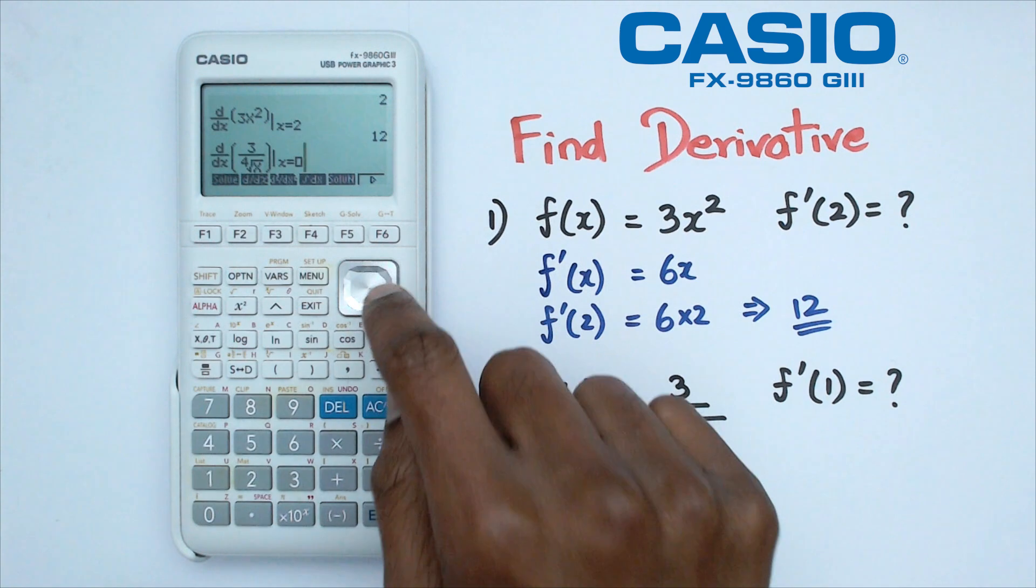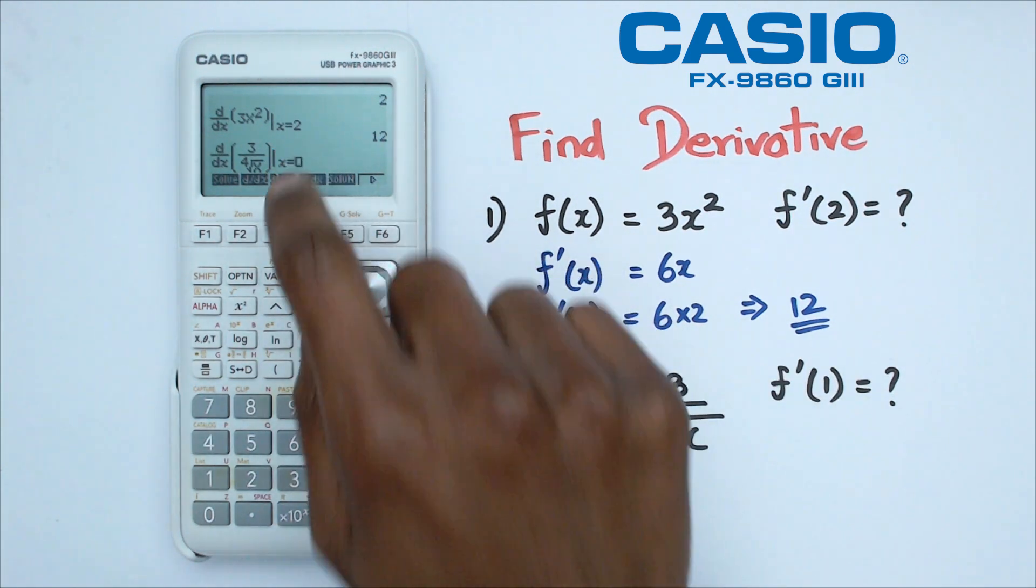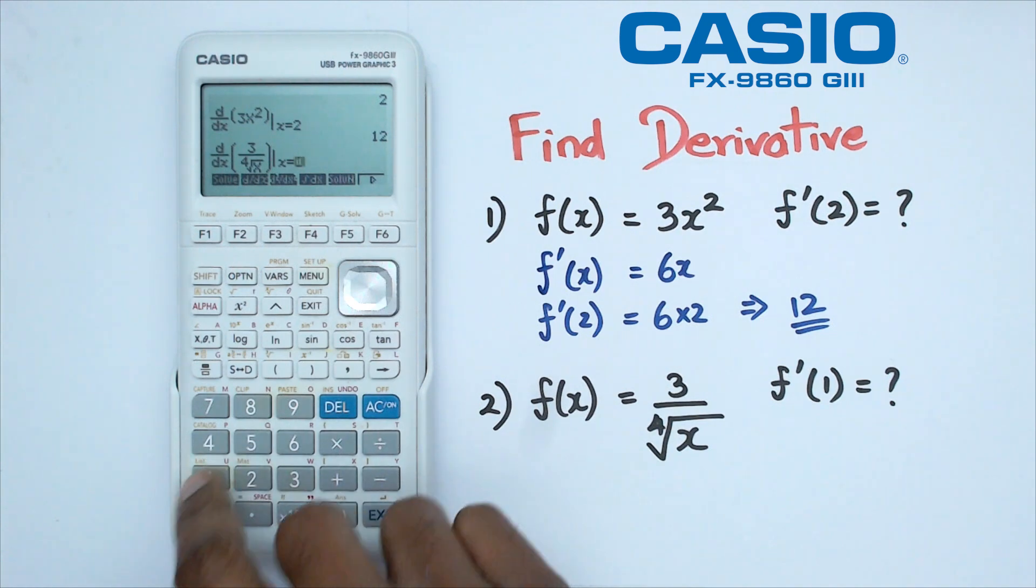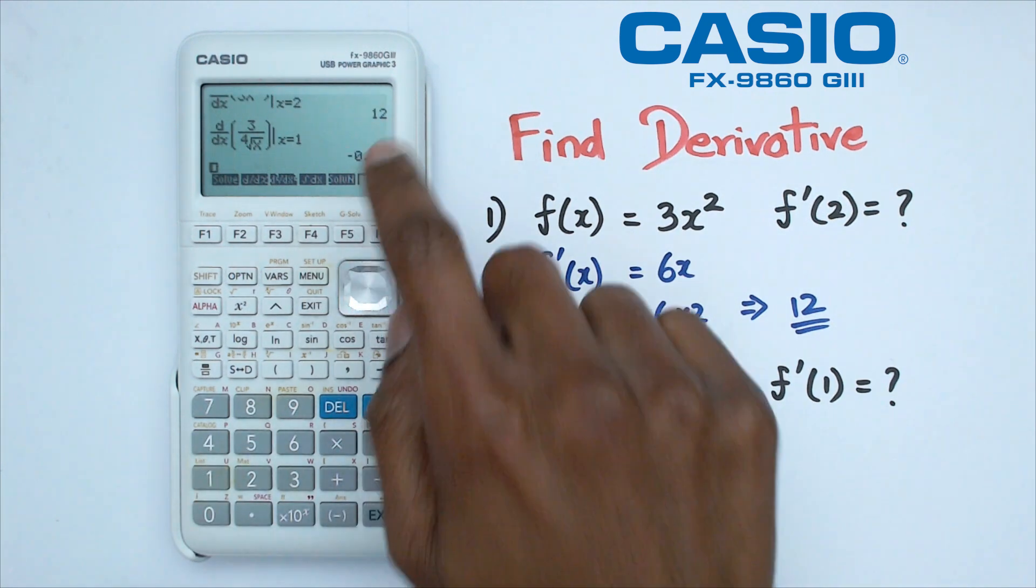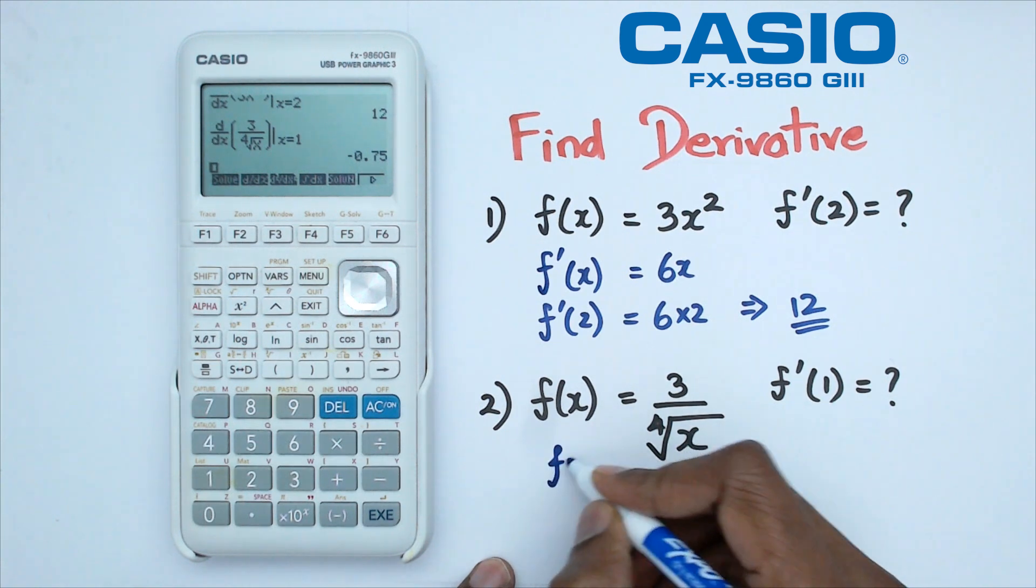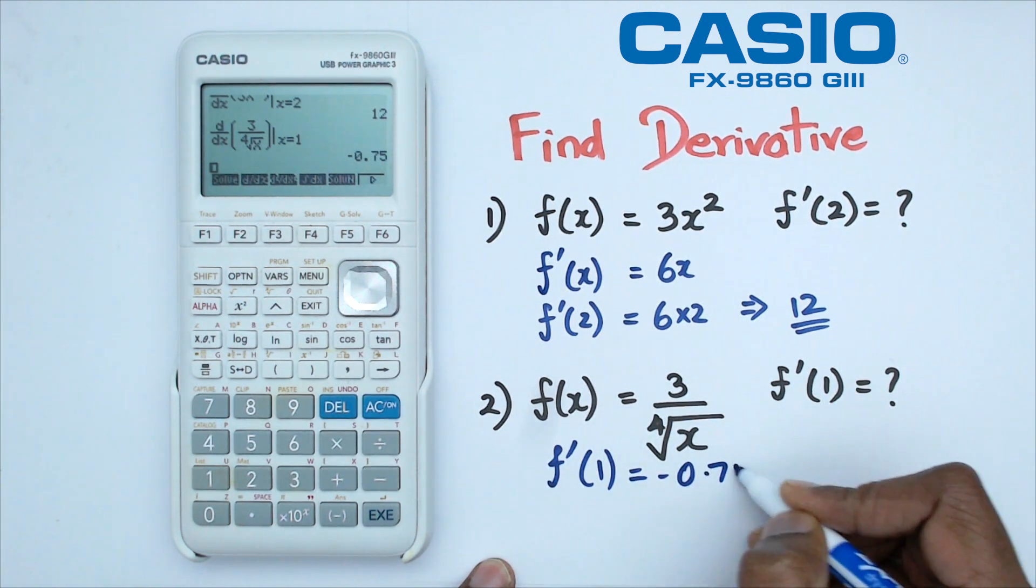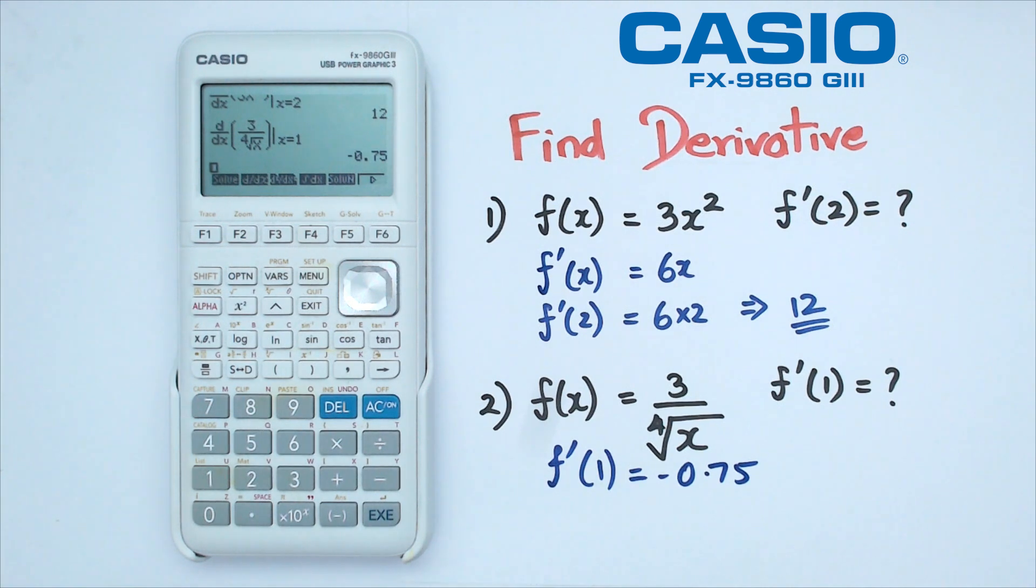And then finally, we said that x is equal to 1. So that's f dash of 1. So we're going to put in the 1 where x is equal to for that box. And when we do that, we actually get f dash of 1 is equal to negative 0.75. So that right there is the gradient for this particular question.